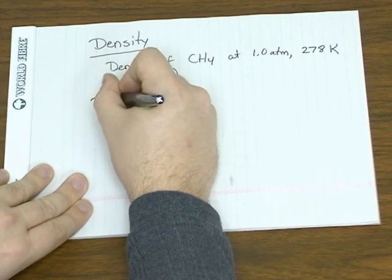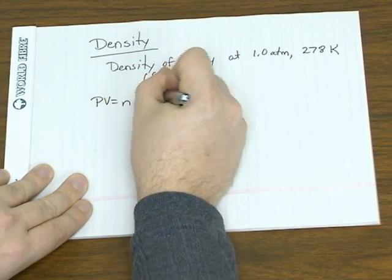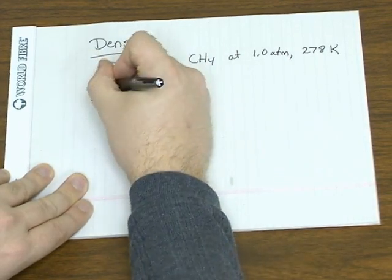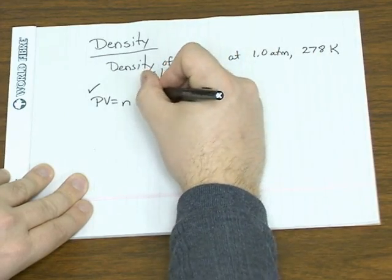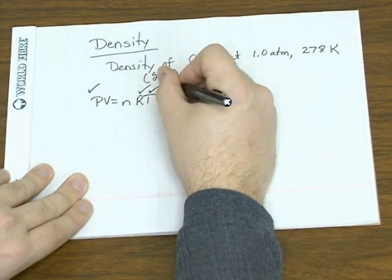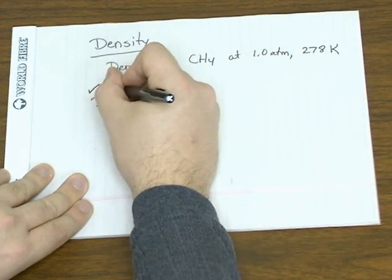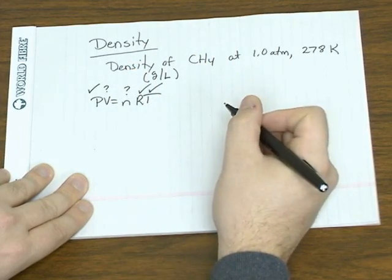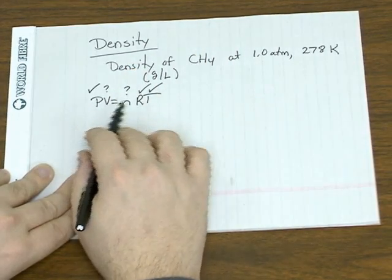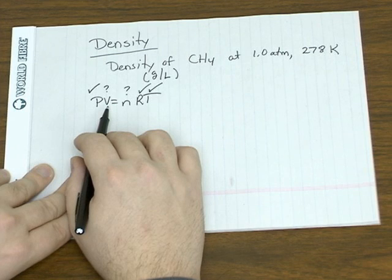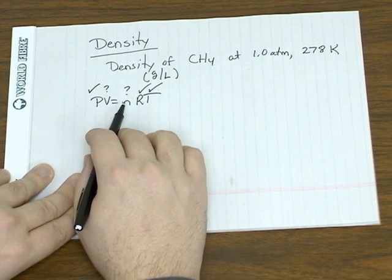So once again, we start with the ideal gas law. We're given a pressure, R's a constant, and we're given a temperature. But we actually have two unknowns at this point. We're not given a volume or an amount.